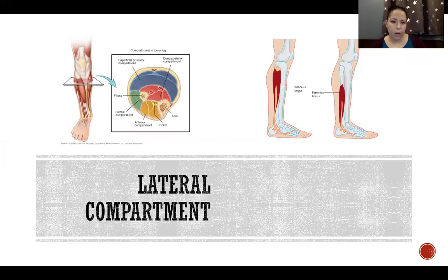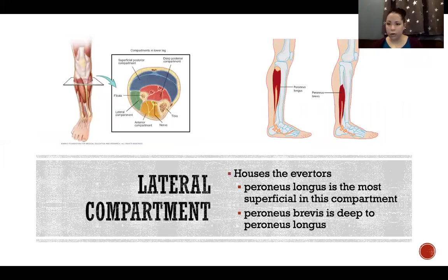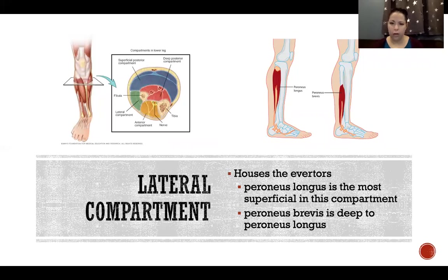The lateral compartment — shown as the green space — contains the everters, which are really only the peroneals. Peroneus longus is the most superficial in this compartment and peroneus brevis is deep to peroneus longus. These two muscles are all that is located in the lateral compartment.